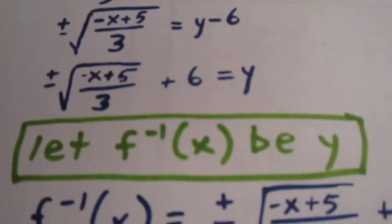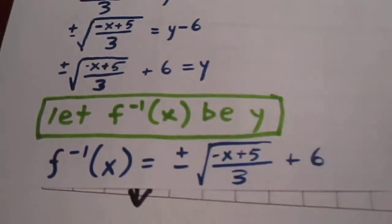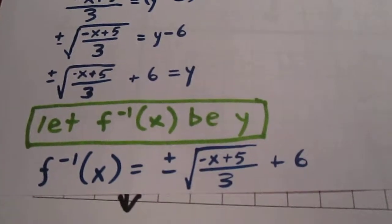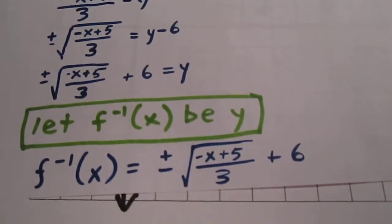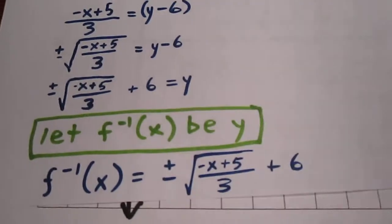And we can then say since f inverse of x is y, that the inverse of the original function is plus or minus the square root of negative x plus 5 over 3 plus 6.